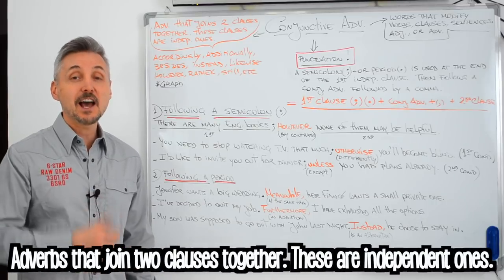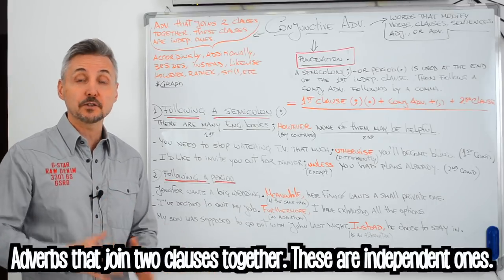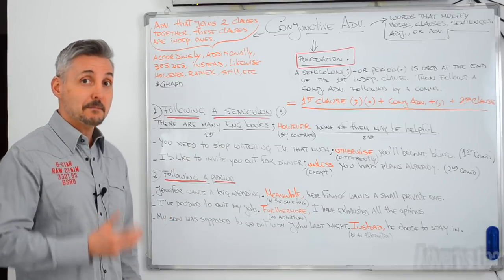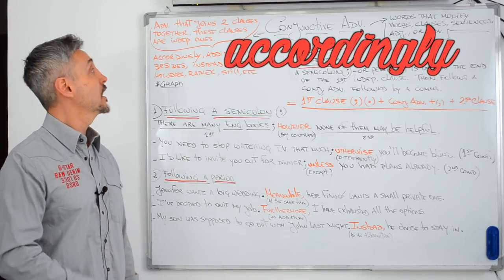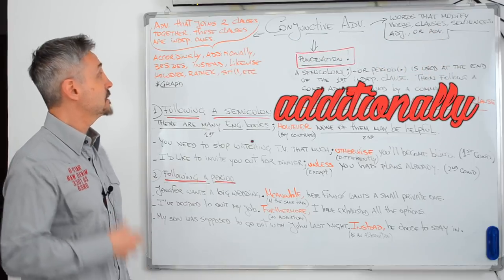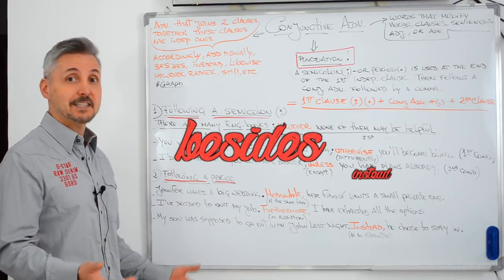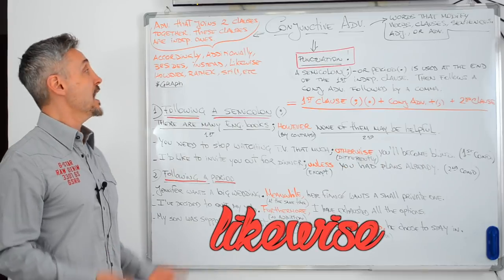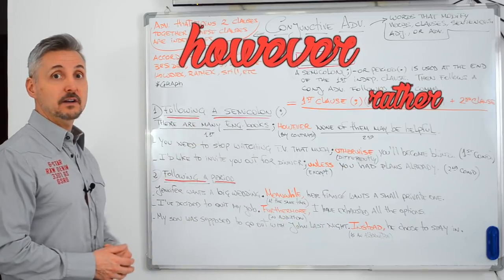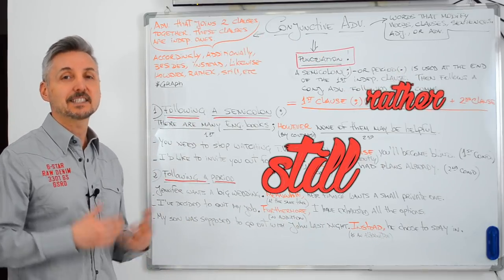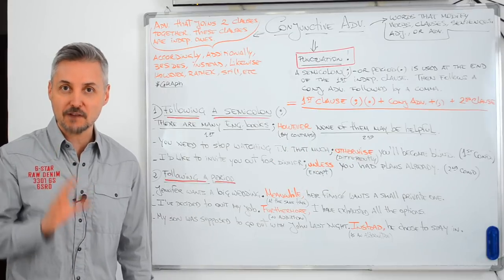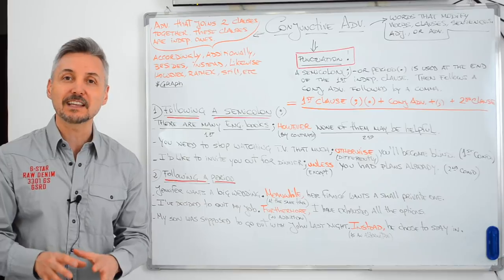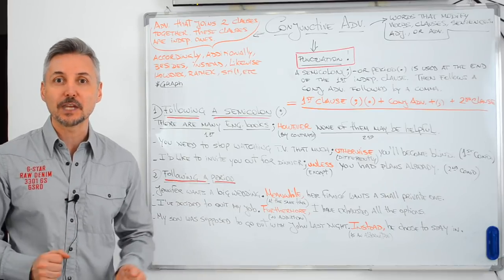Conjunctive adverbs are adverbs that join two clauses together. These clauses are independent ones. We can mention: accordingly, additionally, besides, instead, likewise, however, rather, still, etc. I'm going to post a graph listing all the conjunctive adverbs on my community section, so you can download it.